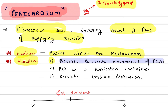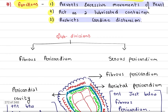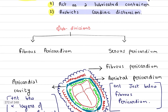The functions of pericardium: first, it prevents excessive movements of the heart. Second, it acts as a lubricated container. Third, it restricts cardiac distension — a very important function.